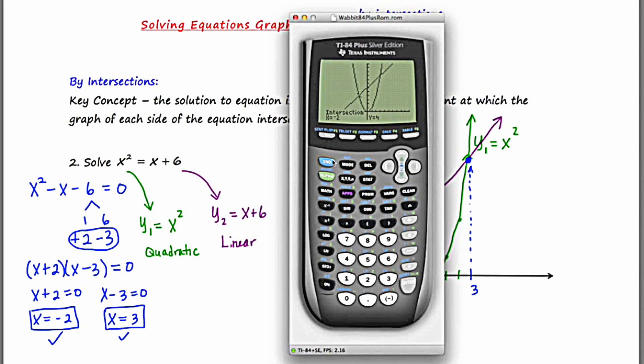Let's repeat the process for the point on the right. Second, trace, intersect. Let's move along the curve to the right most intersection point. And then we'll press enter three times.